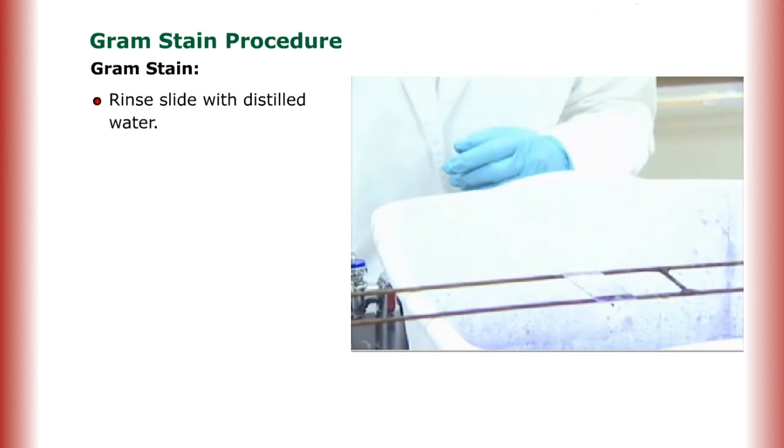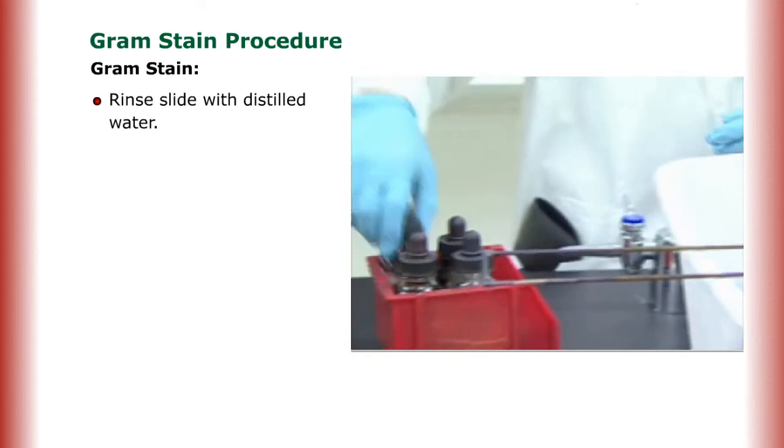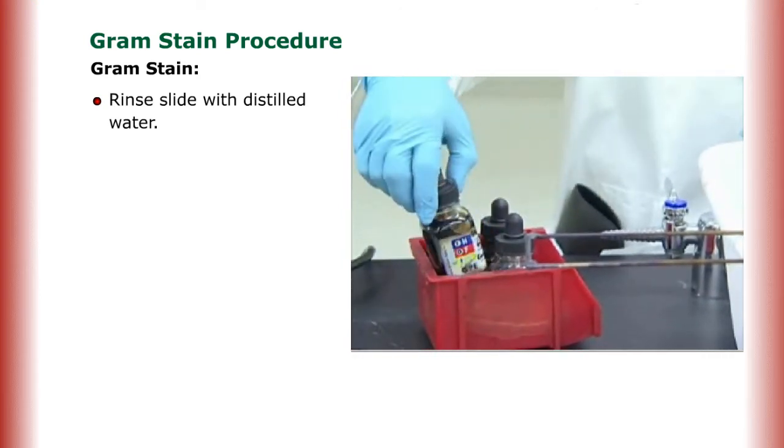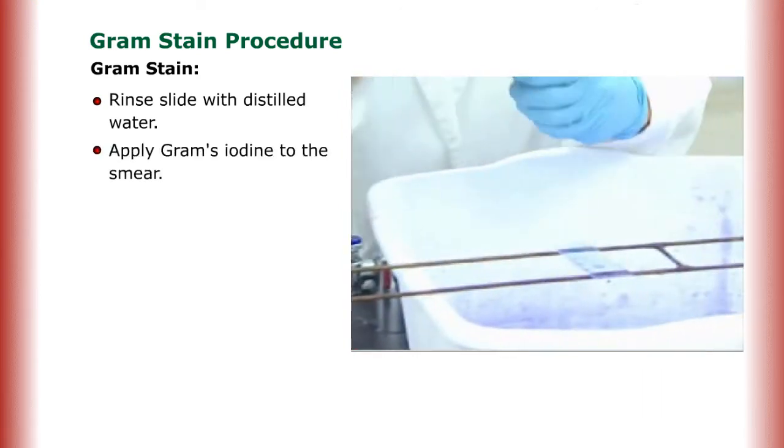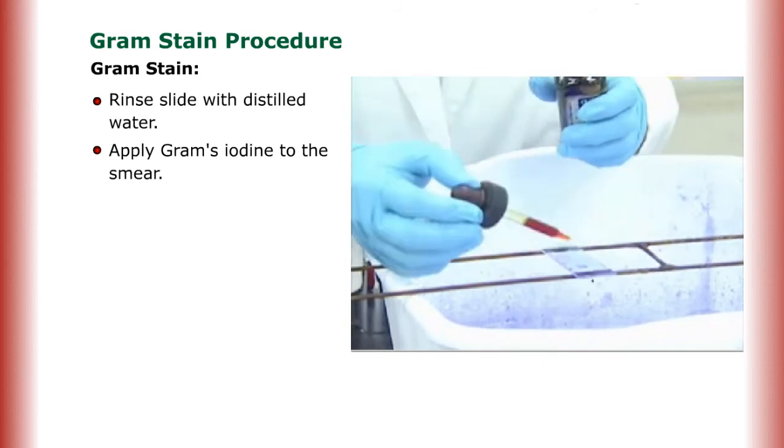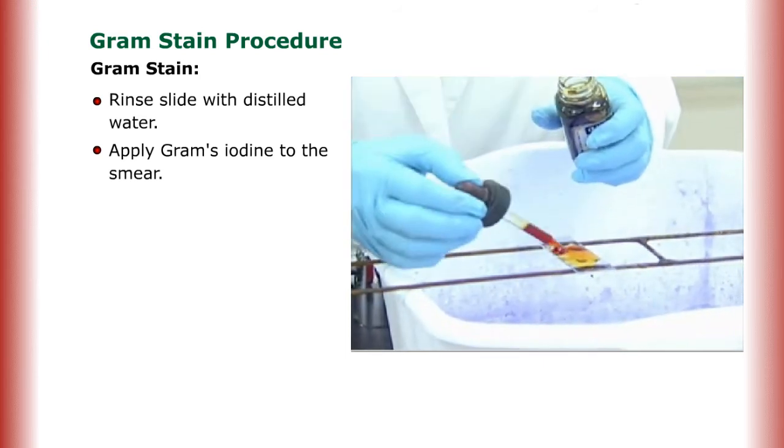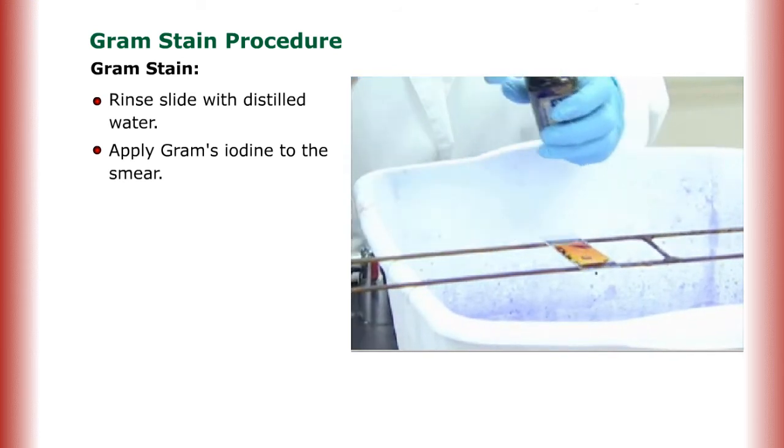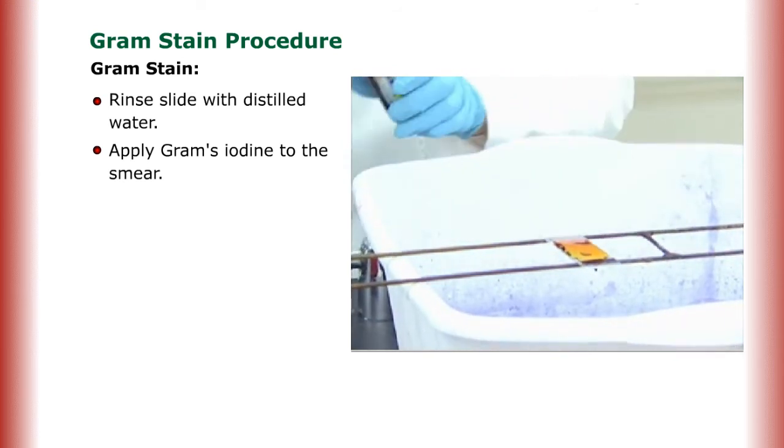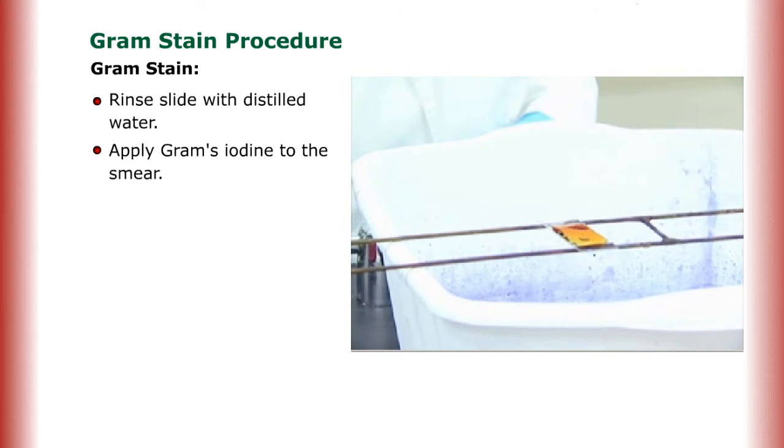The second step in the Gram Stain is to put on Gram's iodine. Again, put this over the smear that you made. Leave Gram's iodine on the slide for one minute.